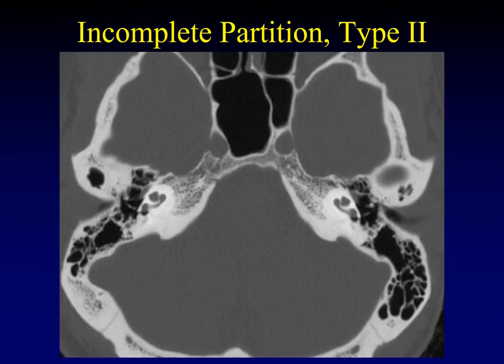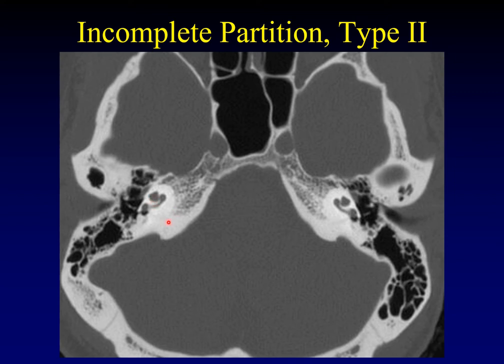Next we'll talk about incomplete partition type 2, the more severe form — type 1 being less severe. In incomplete partition type 2, there are no visible bony scala separating the upper turns of the cochlea. You can still see the basal turn at the bottom, but the middle and upper turns of the cochlea are no longer divisible by bony scala. That's what we mean by incomplete partition of the cochlea.